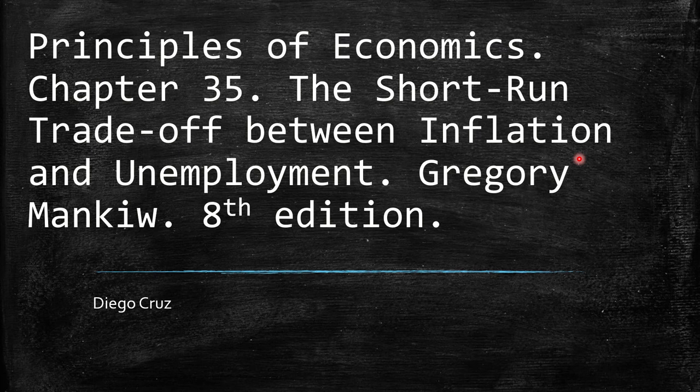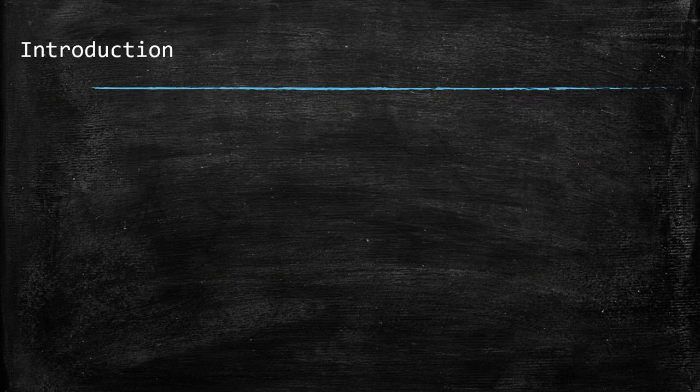Welcome to this video. We're going to develop Chapter 35: The Short-Run Trade-off Between Inflation and Unemployment. This is from the book by Gregory Mankiw, Principles of Economics.